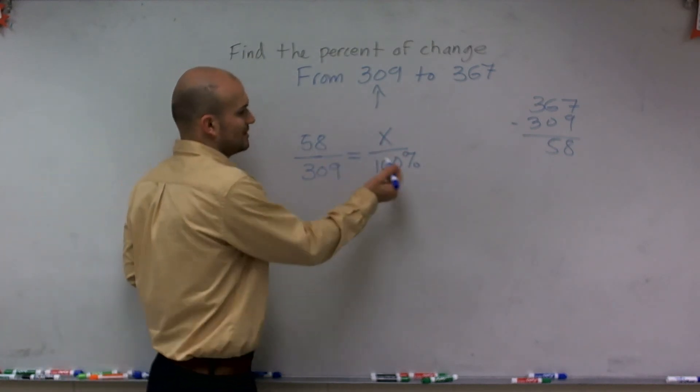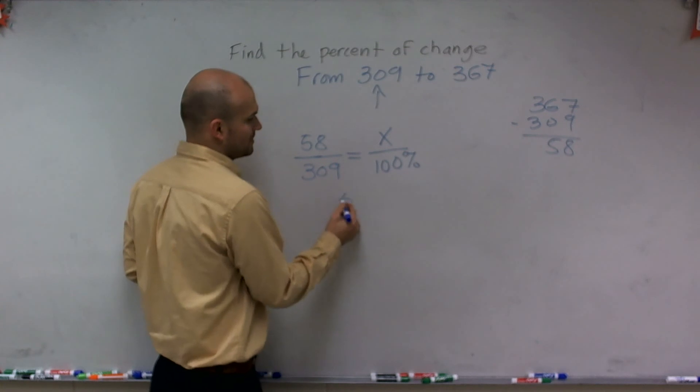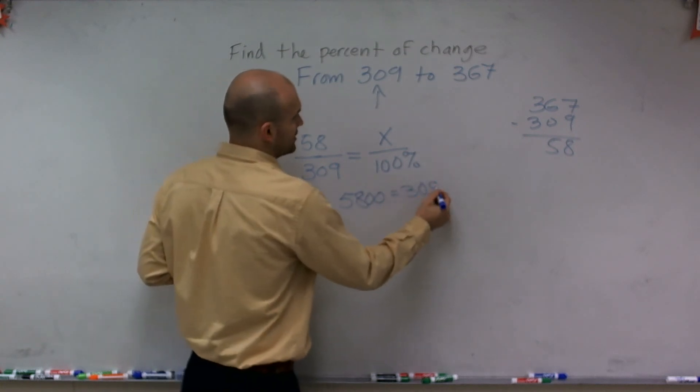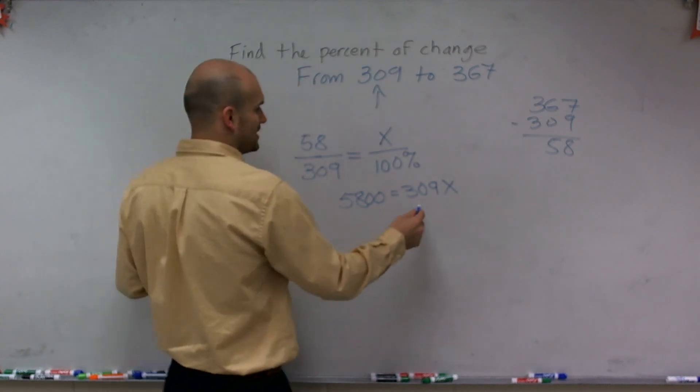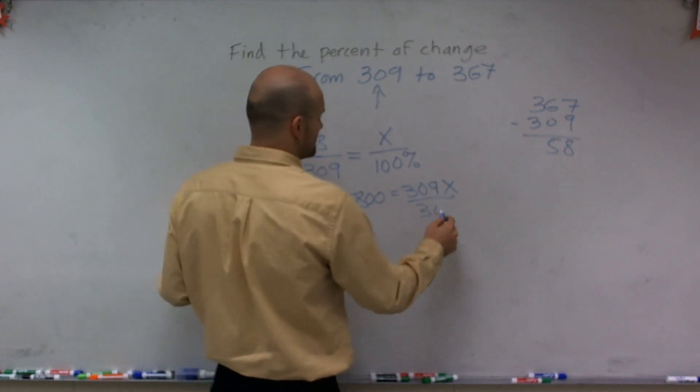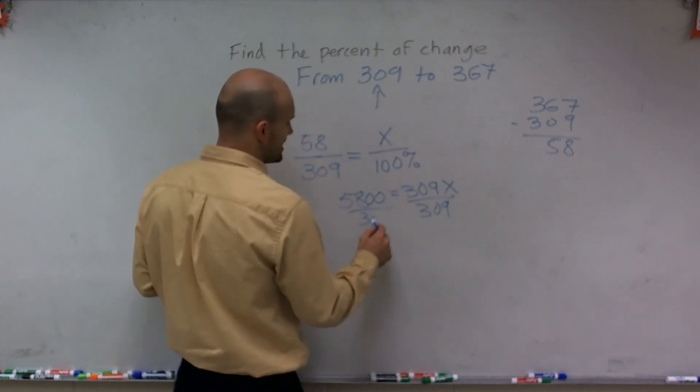So what I can do here is I can just go and cross multiply. So I can do 5,800 equals 309x. Then I'm going to divide by 309 on both sides.